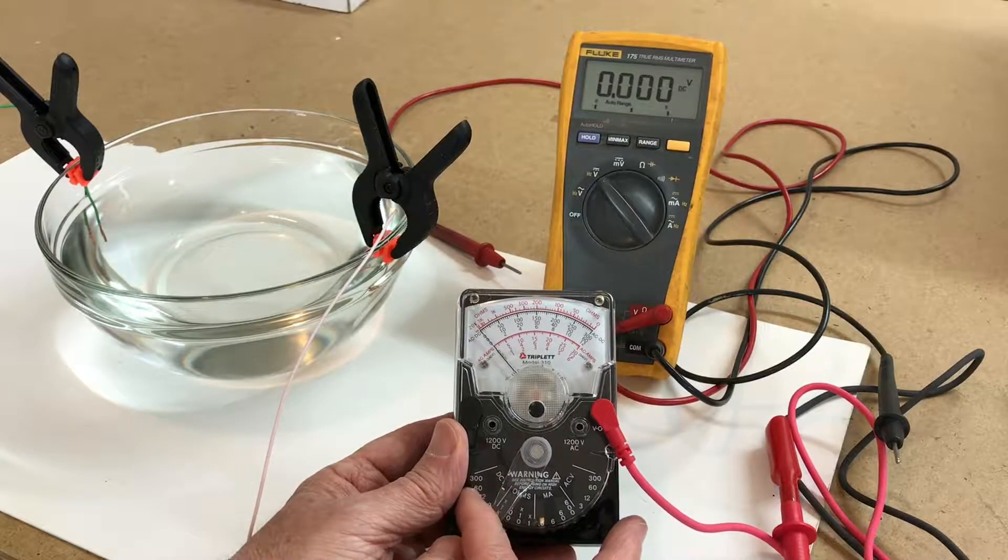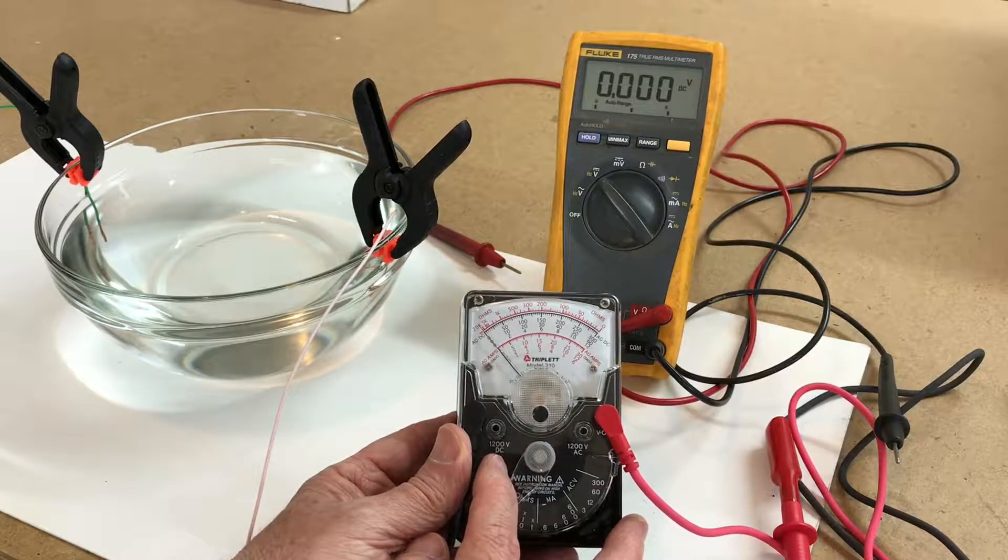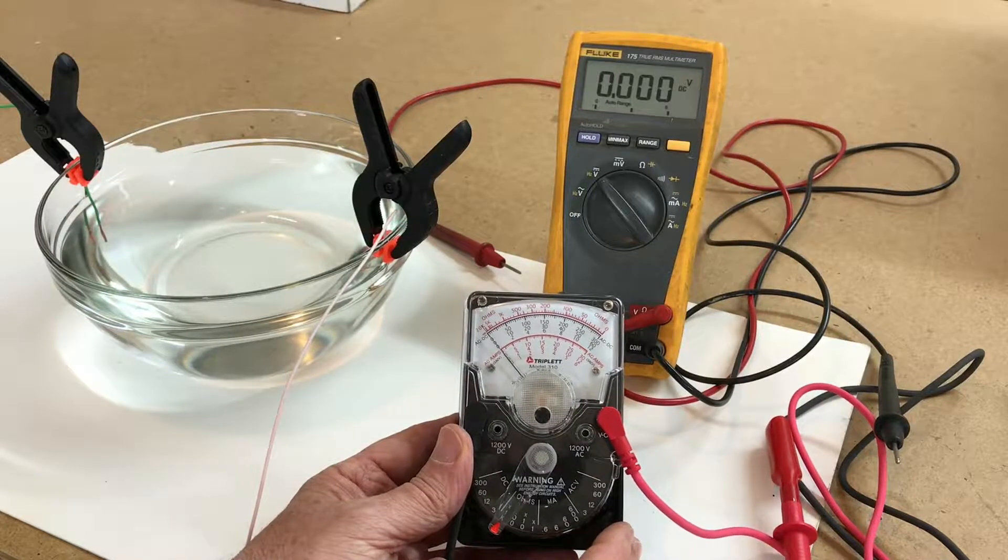DC voltage range goes up to, well there's the 300 range, 1200 volts, 1200 volts AC. So it's a great little meter.